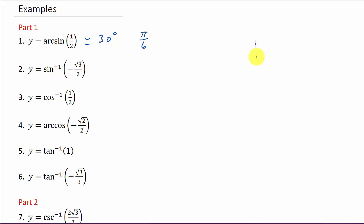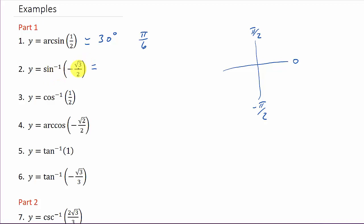For inverse sine of negative √3/2, let's keep it simple. The inverse sine range goes from negative π/2 to π/2. Since we're finding the inverse sine of a negative value, we know we're going to be in the fourth quadrant. The inverse sine of √3/2 is 60 degrees, so the answer is negative 60 degrees, or in radians negative π/3.